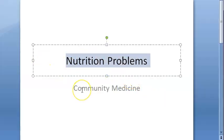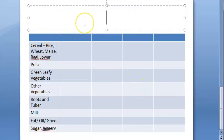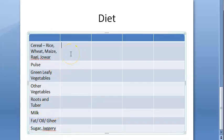In this community medicine topic, let us look at nutrition and health. Basically, they will ask you to plan a diet for a person. In a diet, you should have cereals, pulses, green leafy vegetables, other vegetables, roots and tubers, milk, fat, oil, ghee, sugar and jaggery.